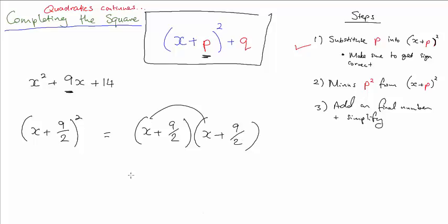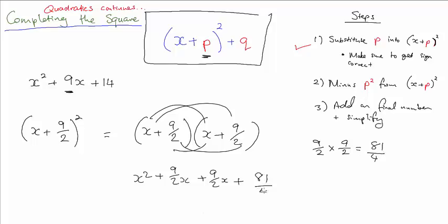So this one will give you x squared. This one will give you plus 9 over 2x. This one will also give you the same thing. And that one, if you're unsure what 9 over 2 times 9 over 2 is, shame on you. Because it's just an easy fraction multiplication. It's 81 over 4. You can leave it like that. Right?